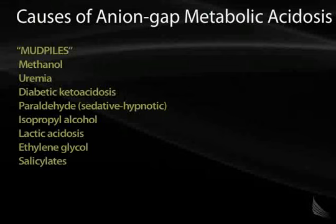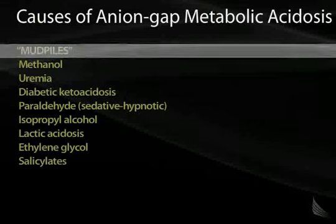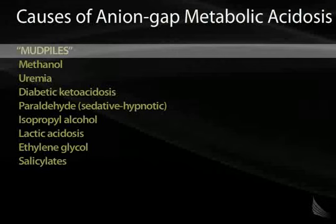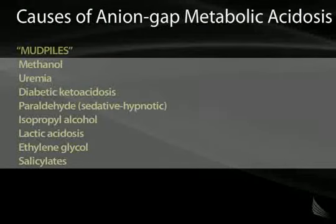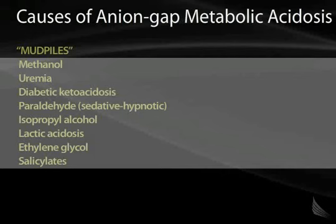Patients can also develop anion gap metabolic acidosis. There's a mnemonic called MUDPILES that is very convenient for remembering the causes: methanol toxicity, uremia, diabetic ketoacidosis, paraldehyde toxicity — less commonly seen today now that we have benzodiazepines — isopropyl alcohol, lactic acidosis (very common), ethylene glycol, and salicylic acid.